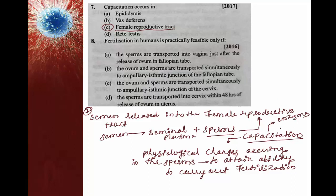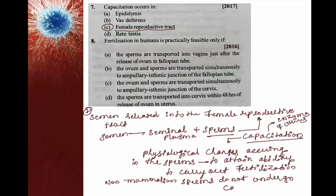One more important point: non-mammalian sperms do not undergo capacitation. After being released, they already have the ability to carry out fertilization without capacitation. So the right answer for this question is option C.